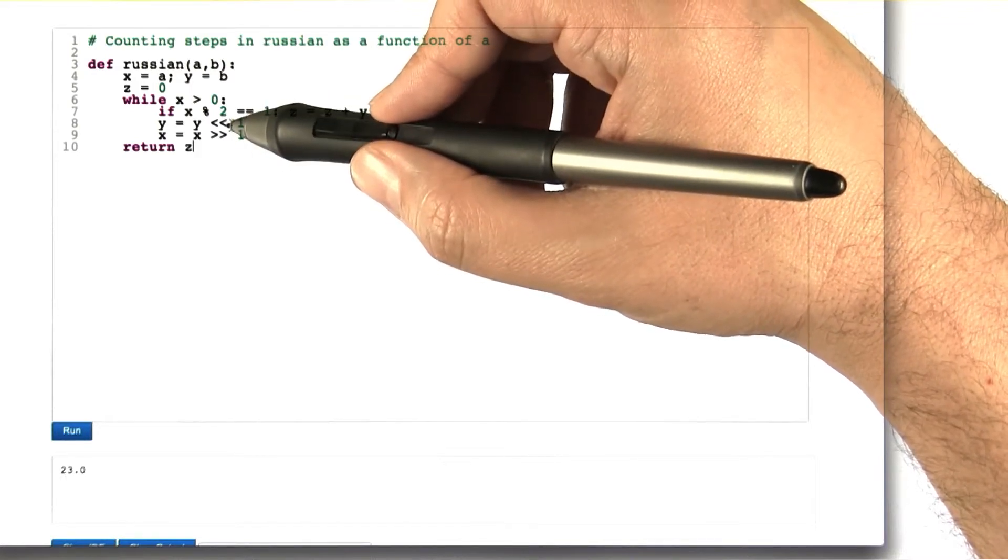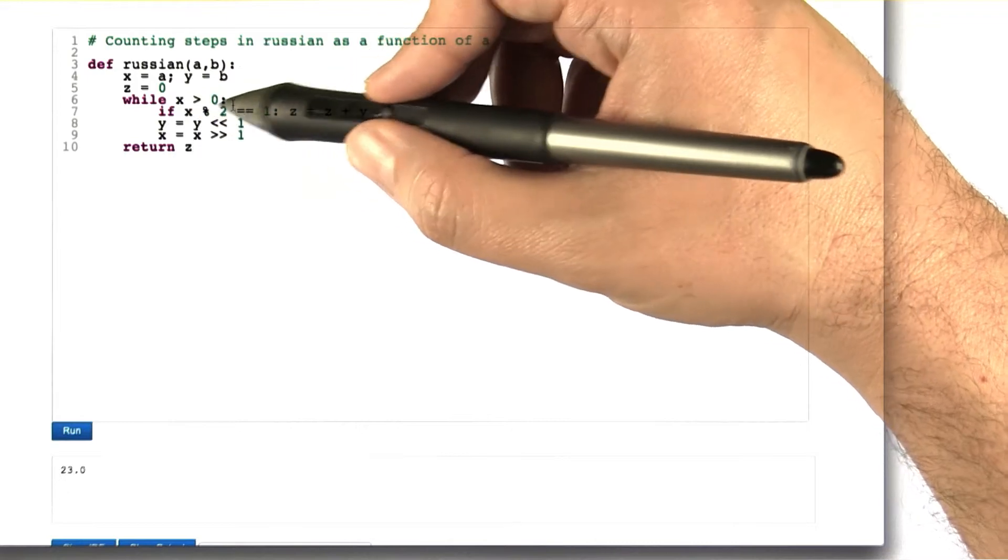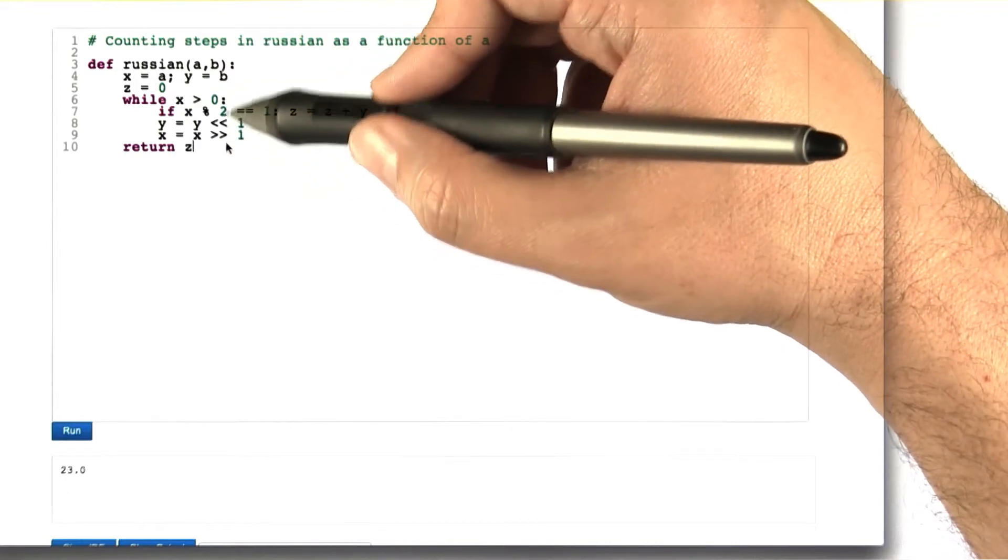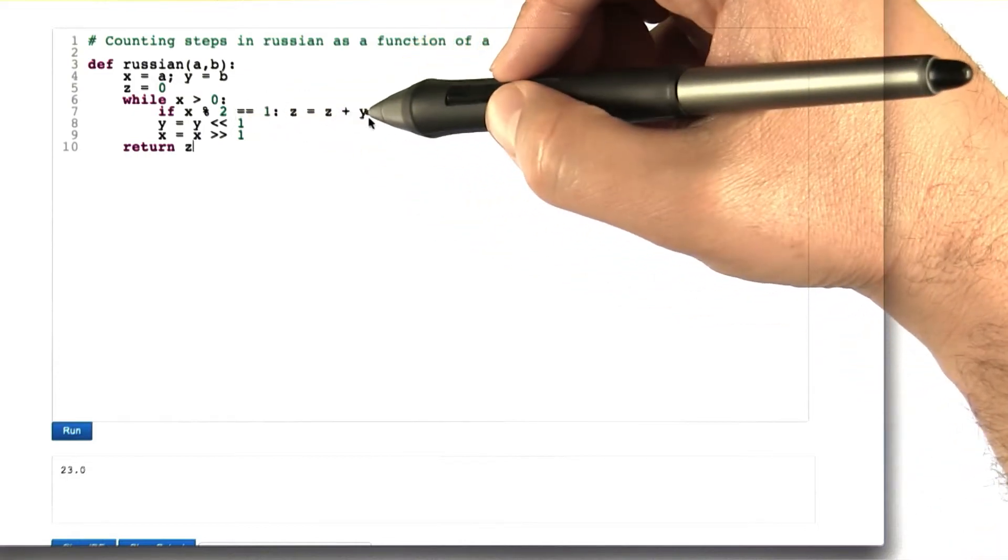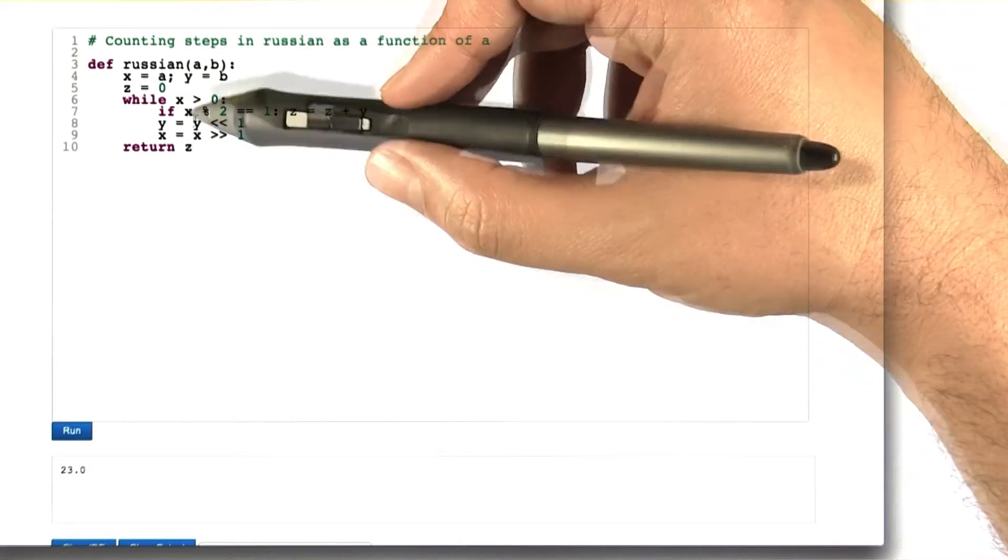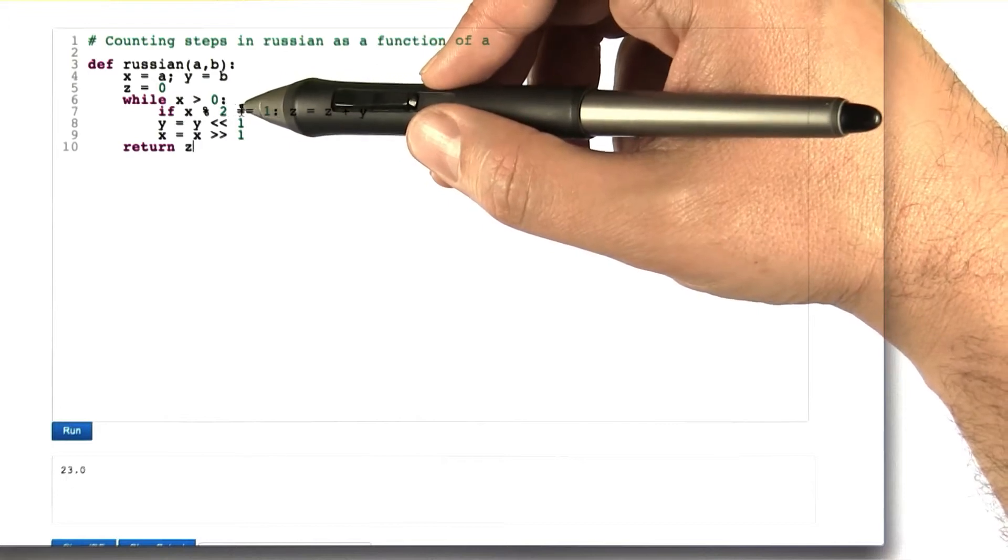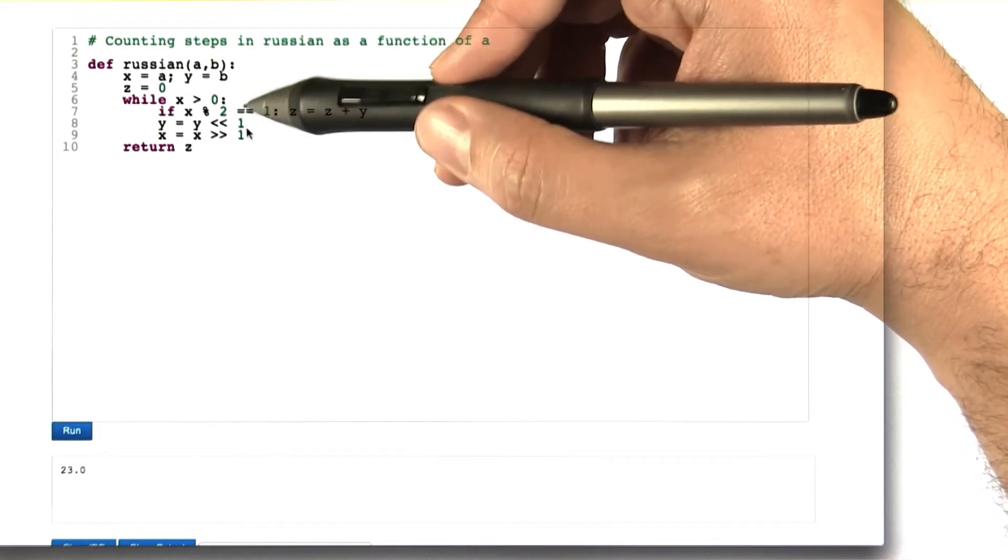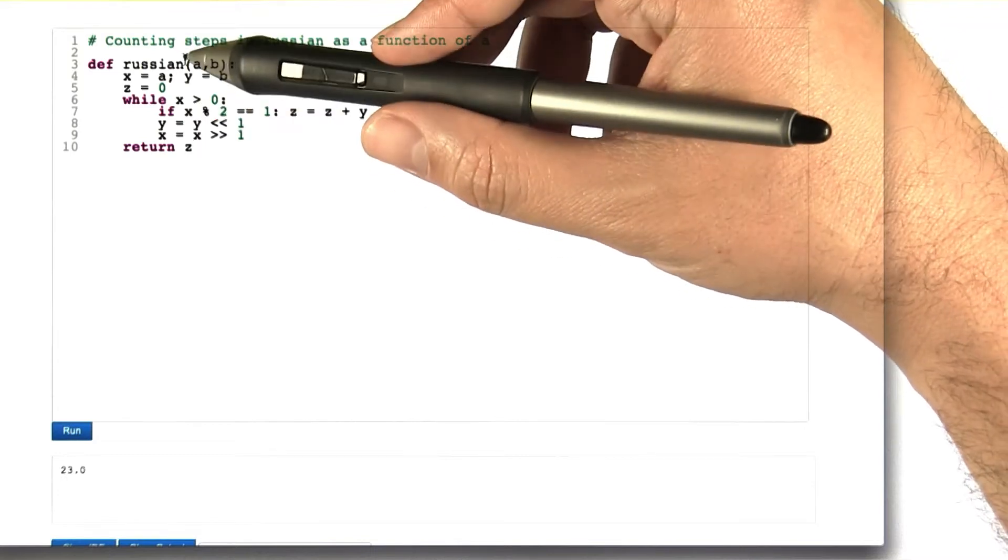Well, there's these two statements that get executed unconditionally, and then there's plus this conditional statement, this evaluation here, gets executed. So these three things get executed, and this additional for statement only gets executed when x is odd. And as we talked about before, that happens however many times as there are one bits in the binary representation of a.